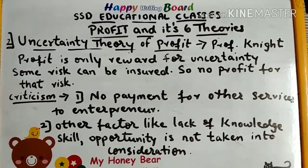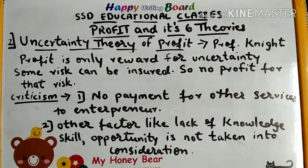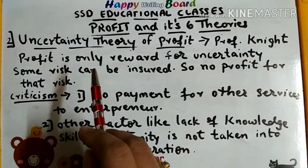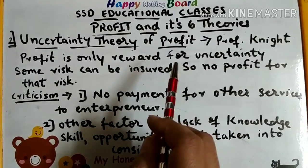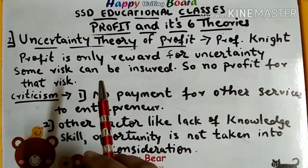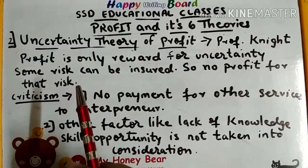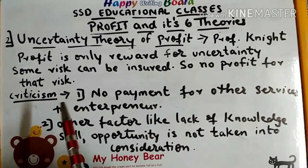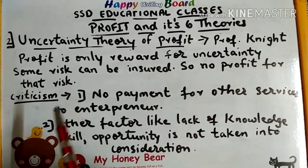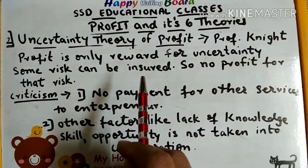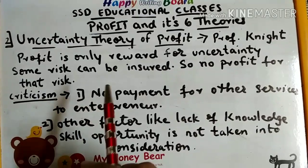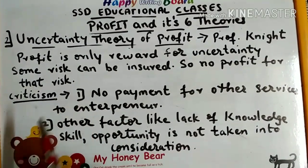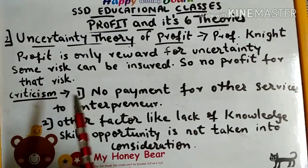The next theory is the Uncertainty Theory of Profit, made by Professor Knight. He said profit is the reward only for uncertainty. An entrepreneur should receive profit only for bearing uncertainty. There are two types of risk: insured risk and uninsured risk. Only uninsured risk deserves profit, because insured risk is covered by premium payments.